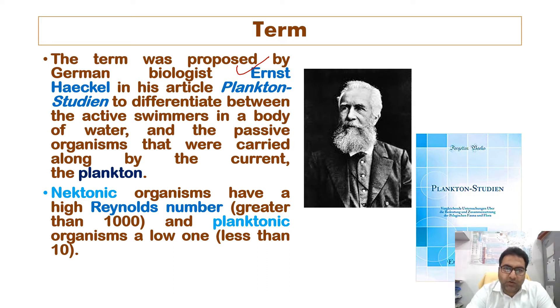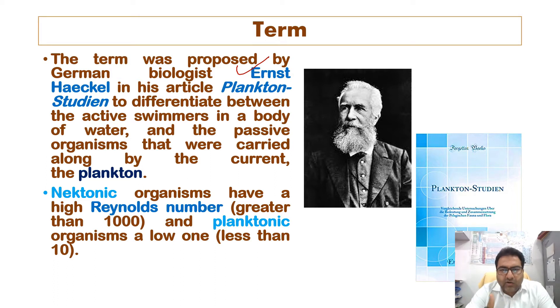In the case of nektonic organisms, the Reynolds number is greater than 1,000, whereas in the case of planktonic organisms it is less than 10.